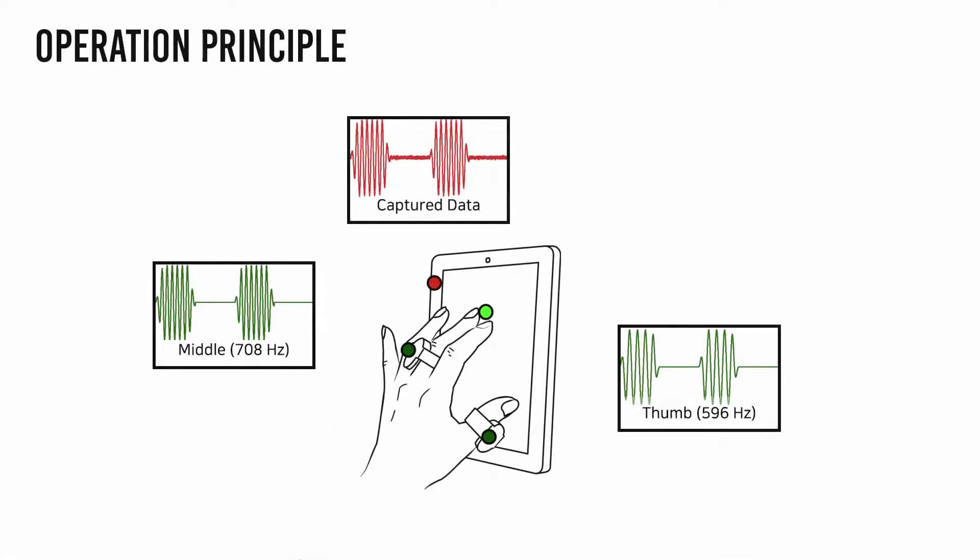We transmit on-off keying sequences to make the communication robust to external sound noise. Basically, each finger is augmented with a unique carrier frequency, which is carefully selected by considering auditory and tactile perception.